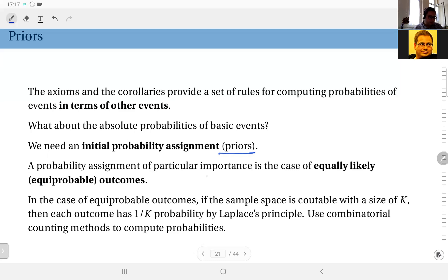A probability assignment of particular importance is the case of equally likely outcomes, also called equiprobable outcomes. In the case of equiprobable outcomes, if the sample space is countable with the size of k, then each outcome has 1 over k probability. Of course, here we are assuming k is a finite number. Our sample space is a finite set.